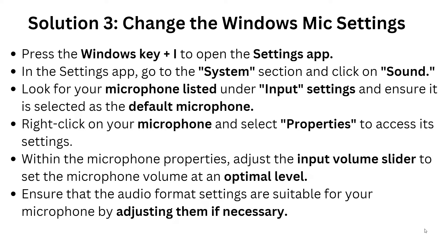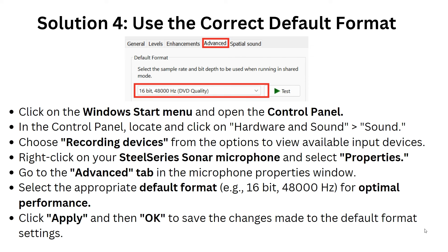Right-click on your microphone and select Properties to access the settings. Within the microphone properties, adjust the input volume slider to set the microphone volume at an optimal level, such as 100. Then ensure that the audio format settings are suitable for your microphone by adjusting them if necessary.